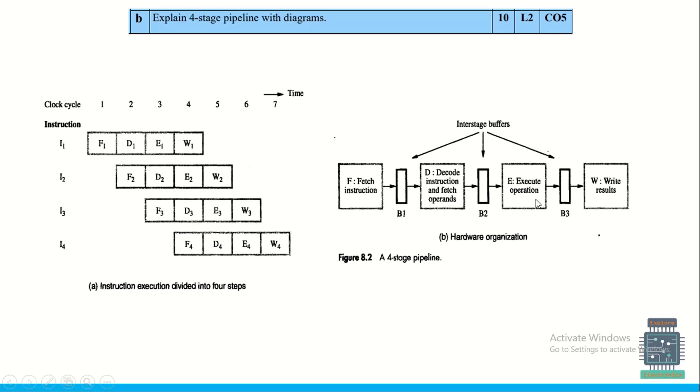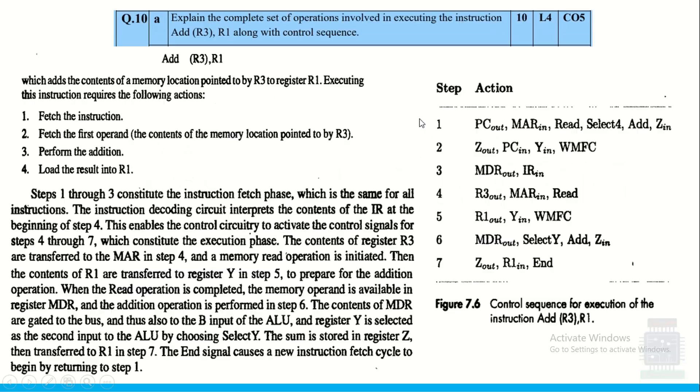To explain a four-stage pipeline with diagrams: the instruction execution is divided into four steps. The four-stage pipeline diagram is provided, and you need to explain these two diagrams clearly for 10 marks.